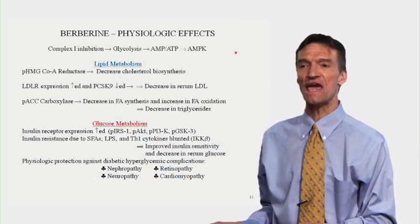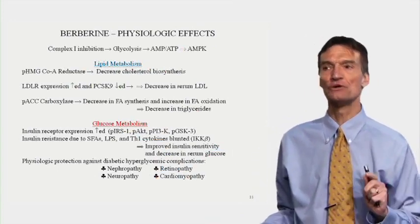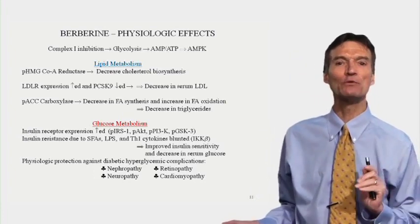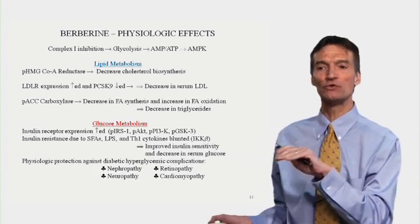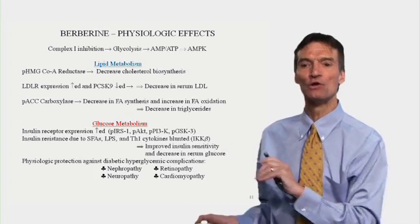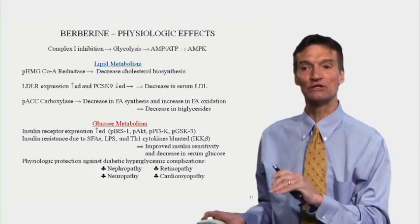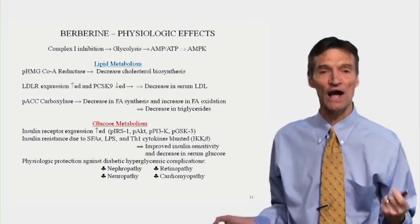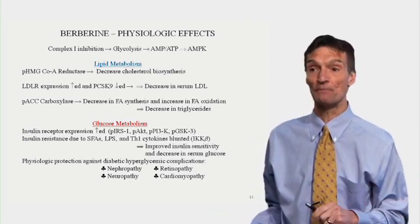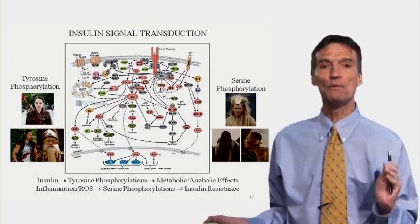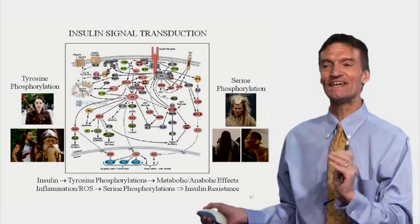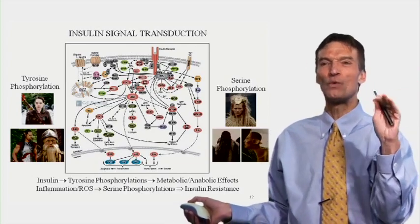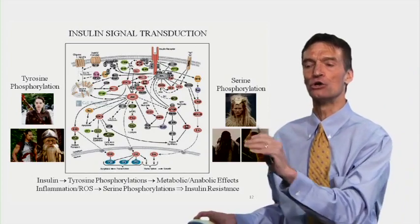Berberine activates AMPK to lower lipids. Insulin receptor expression increases, and we promote beneficial physiologic tyrosine phosphorylation of the downstream enzymes that mediate insulin activity. We're going to blunt insulin insensitivity due to inflammation, lipopolysaccharide, fatty acids, and cytokines. This will provide physiologic protection against the consequences of hyperglycemia: nephropathy, neuropathy, retinopathy, and cardiomyopathy. Berberine promotes tyrosine phosphorylation, directly inhibiting the deleterious effects of Queen Jadis. By promoting tyrosine phosphorylation, we can block insulin insensitivity that would otherwise occur due to inflammation.